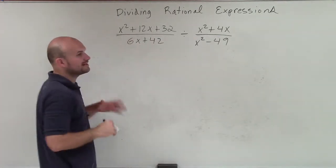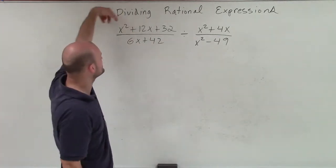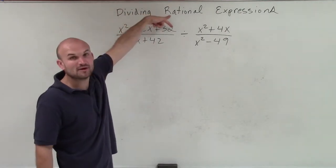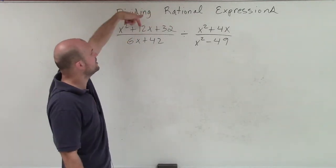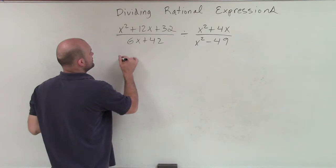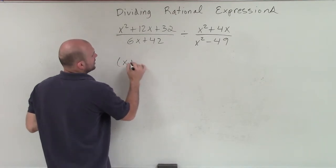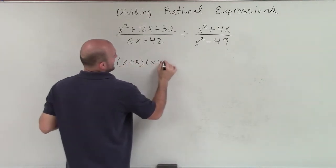So we have a trinomial here, so I'm going to have to factor that. And what I'm going to do, since my a is 1, I need to determine what two terms multiply to give me 32, but then add to give me 12. So I can rewrite that in my factored form of x plus 8 times x plus 4.